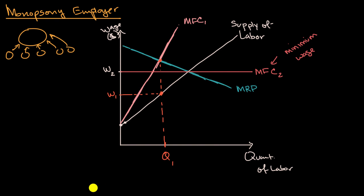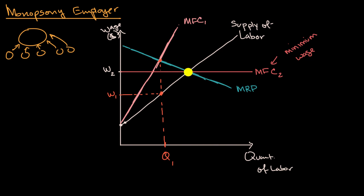In a world where the government sets a minimum wage, it starts to feel — at least graphically — a lot more like a competitive labor market. Although this isn't due to market forces, it's due to government law. The monopsony employer will no longer have its upward sloping marginal factor cost curve — I'll call this marginal factor cost curve one. Now the government has defined the wage, so no matter how many people they hire, they're going to pay that same wage. So the marginal factor cost is now a horizontal line at the government-set wage — marginal factor cost sub two — due to the minimum wage.